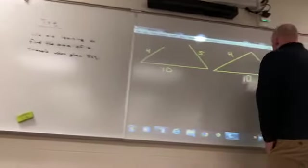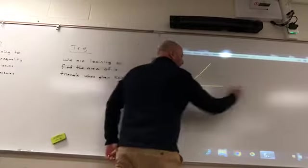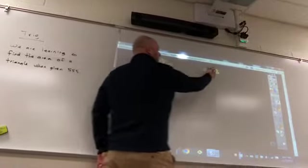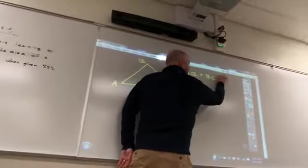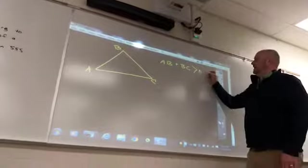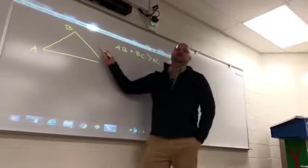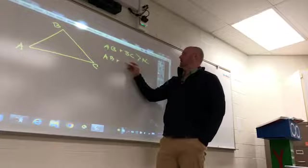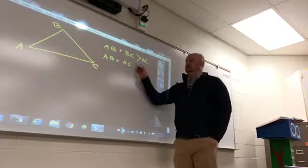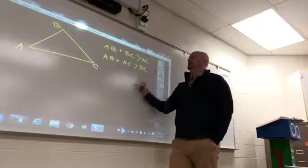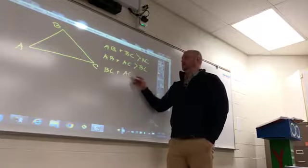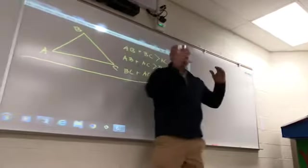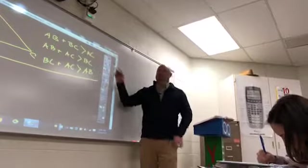There's a theorem that basically says with any triangle, if you take side AB and add BC, it has to be bigger than AC. This side plus this side has to be bigger than that side. Also, AB plus AC has to be bigger than BC. And BC plus AC also has to be bigger than AB. If you take any triangle and take two sides, any two sides, it has to be bigger than the third.